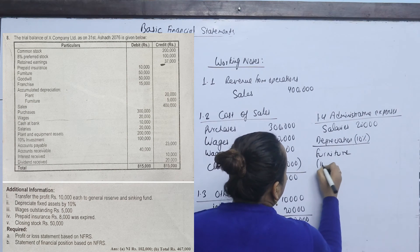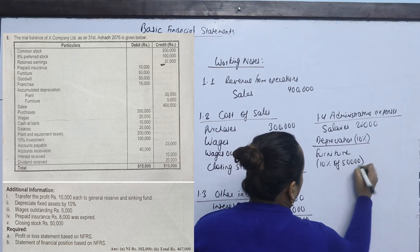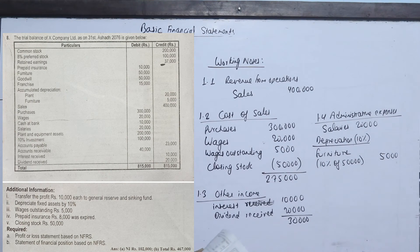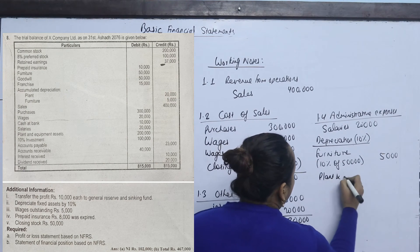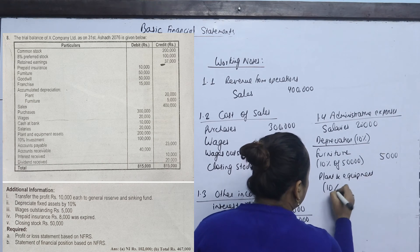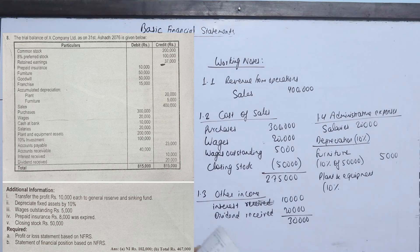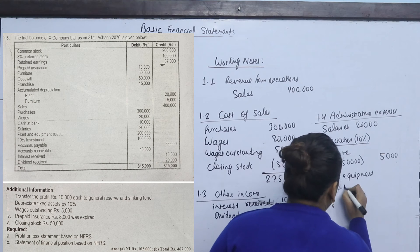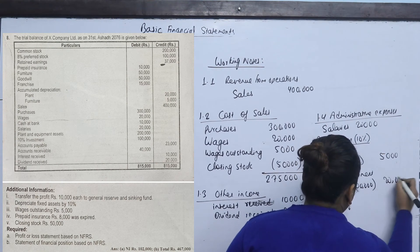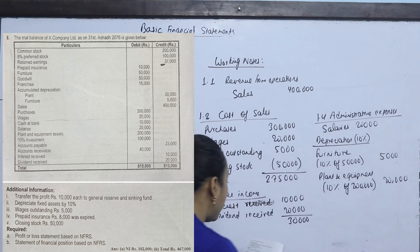Depreciation is 10% on fixed assets. Plant and equipment is 50,000 from the trial balance, giving depreciation of 5,000. Plant and equipment is 2 lakhs at 10%, giving depreciation of 20,000. Total depreciation on plant and equipment is 20,000, and furniture depreciation is 5,000.